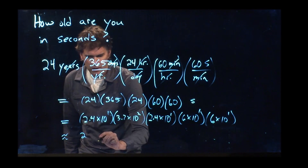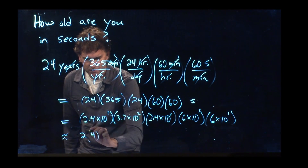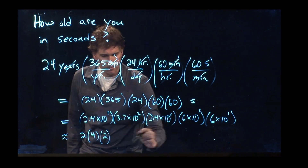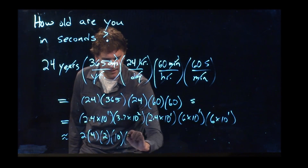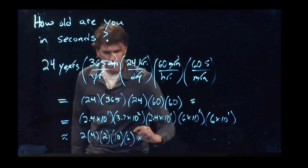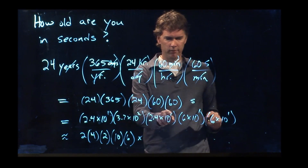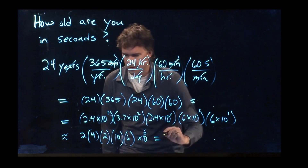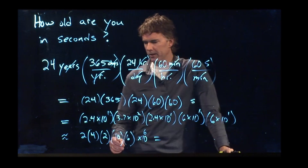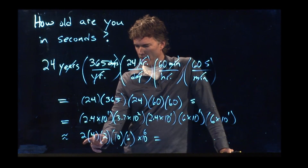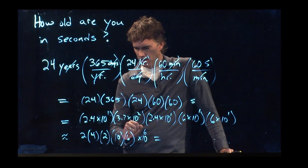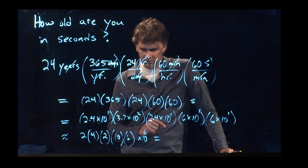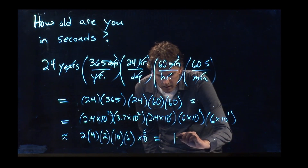So this is approximate. If I bump one down I can bump the next one up, and if I bump that one down I can bump the next one up, and we'll leave the last one. Then we just count up the zeros: 1, 2, 3, 4, 5, 6. Now we multiply: 2 times 4 is 8, times 2 is 16, times 10 is 160, times 6 is roughly a billion.